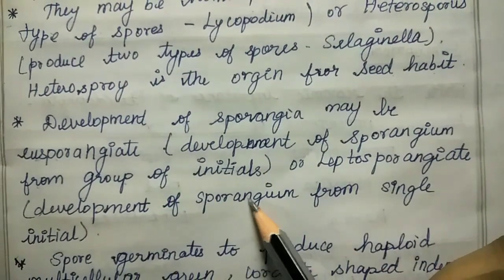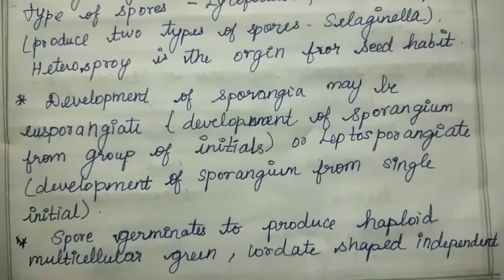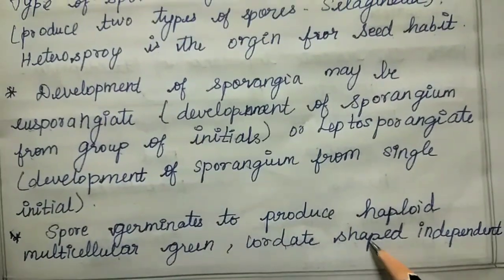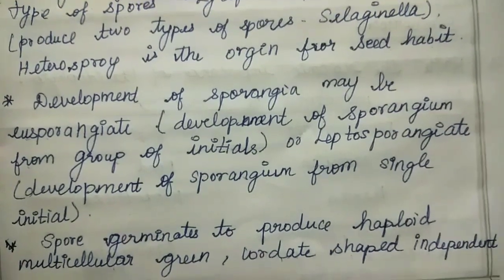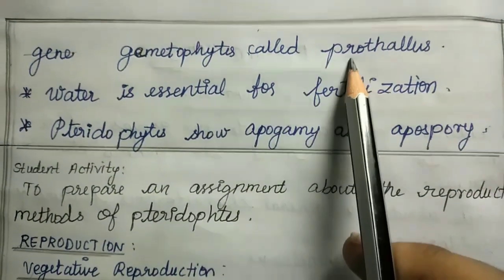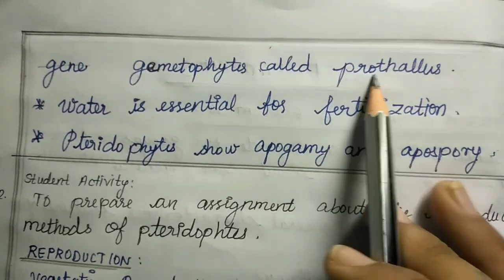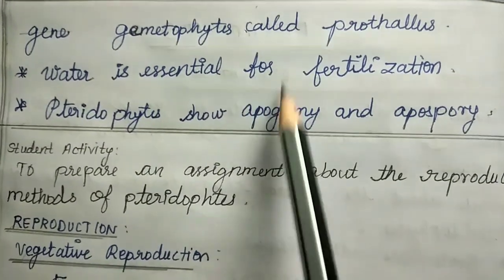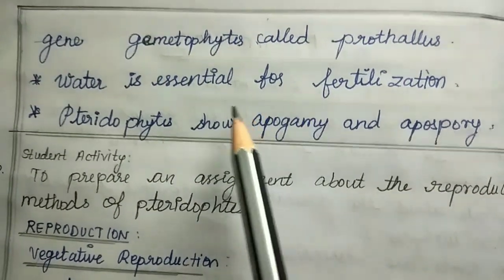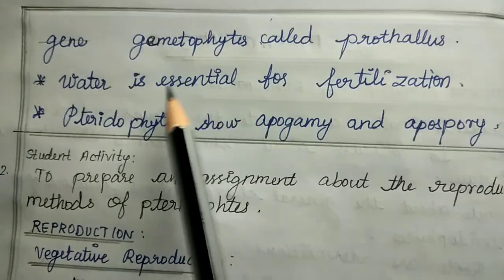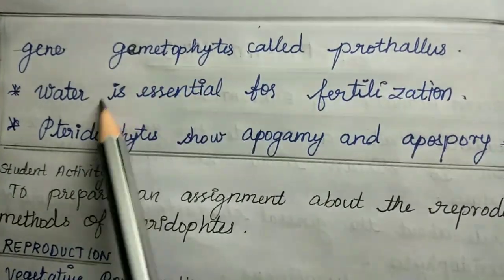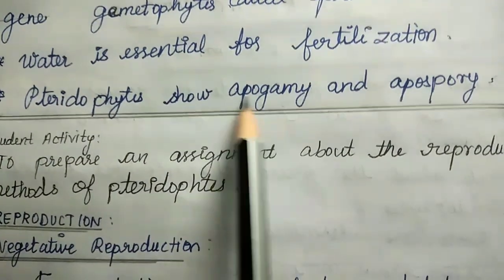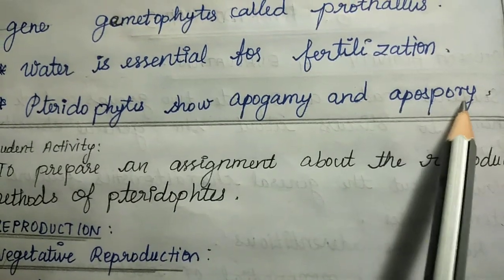Development of sporangia may also be from a single initial. Sporangia produce haploid, multicellular, green, cordate-shaped independent gametophytes called prothallus. Water is essential for fertilization. Pteridophytes show apogamy and apospory.